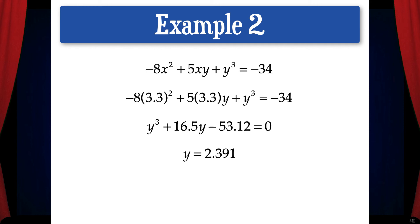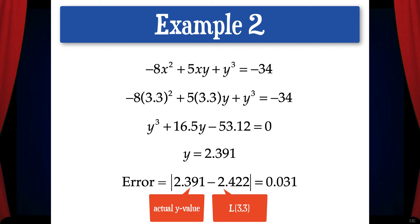We can also find the error between the actual value and the value that we found with the linear function. That would be the absolute value of 2.391 minus 2.422, which is 0.031.